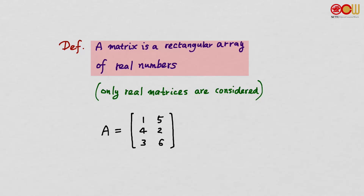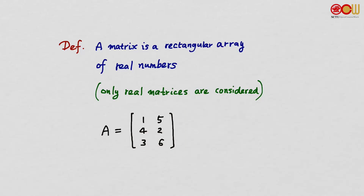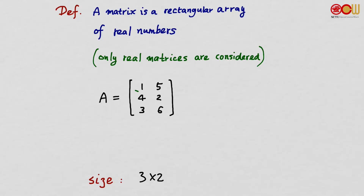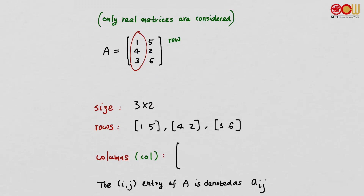A matrix is simply a rectangular array of real numbers, and we will only talk about real matrices in this book. For example, A is this matrix here. We say the size of this matrix is 3 by 2. This matrix has three rows — 1 5, 4 2, and 3 6 — and each row is called a row vector. This matrix has two columns — 1 4 3 and 5 2 6 — and each is called a column.